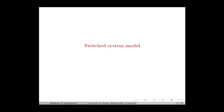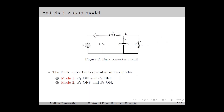We start with the switcher system model. To illustrate switcher system modeling, we consider a buck converter as shown in the figure. Here we have two switches operated in a complementary way. We denote mode 1 as the case in which S1 is ON and S2 is OFF. Similarly, mode 2 corresponds to S1 OFF and S2 ON. During mode 1, the input DC source is connected to the circuit, which delivers energy to the load, capacitor, and inductor. During mode 2, the DC source is disconnected and the energy stored in the inductor and capacitor is delivered to the load.